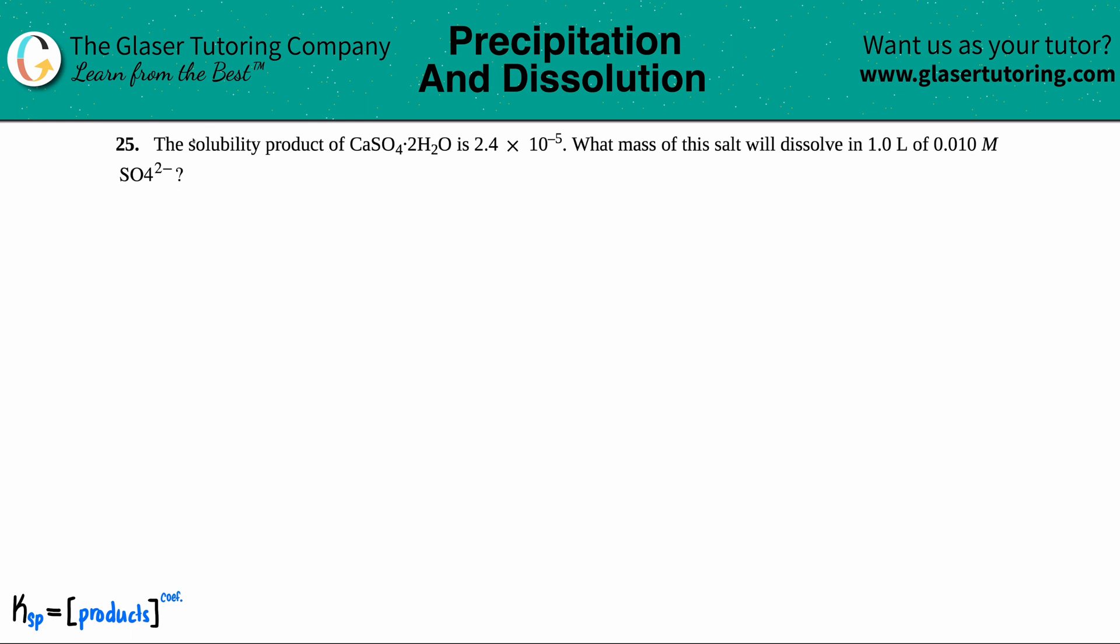Number 25, the solubility product of CaSO4·2H2O is 2.4 times 10 to the negative 5. What mass of this salt will dissolve in 1.0 liters of a 0.010 molar SO4 2- concentration?